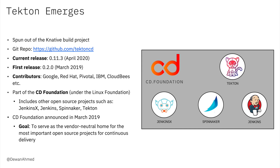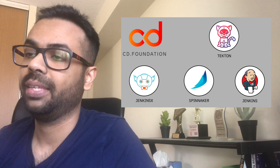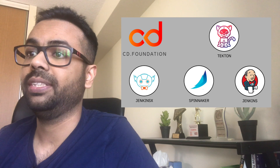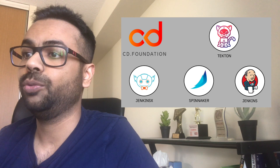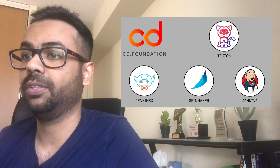Keeping all these in mind, Tekton started as its own project, actually from the Knative Build project. The Knative Build project, being very popular, was spun off as a separate project. Although it originated at Google, Tekton was made open source, and since then Google, IBM, Red Hat, and a number of individual contributors have contributed to this very popular project. Tekton is part of the Continuous Delivery Foundation, the goal of which is to be a vendor-neutral home for the most important open source projects for Continuous Delivery.